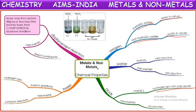On reaction of metals with solutions of other metals - we call these displacement reactions. More reactive metals displace less reactive metals from their compound solutions. Based upon this, we have also studied the metal reactivity series - which metals are more reactive and which are less reactive. A more reactive element can displace a less reactive element from its solution.